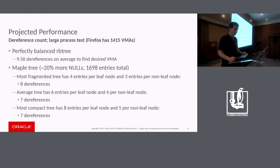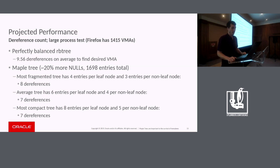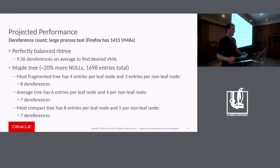Looking at projected performance: a perfectly balanced rbtree will require more dereferences to find the desired VMA. This is achieved by the branching factor of the maple tree — five for allocation ranges and eight for regular right now. We're slightly better at dereferencing at our worst case, so it's promising to perform better than the rbtree.